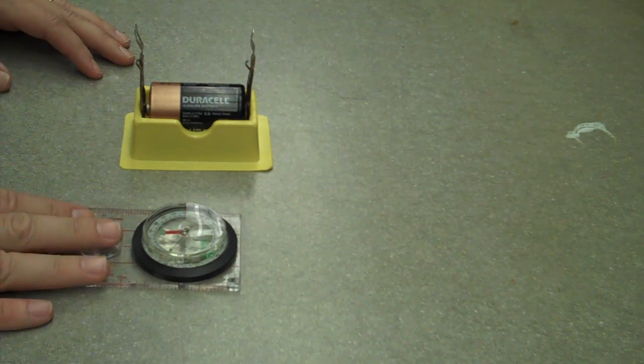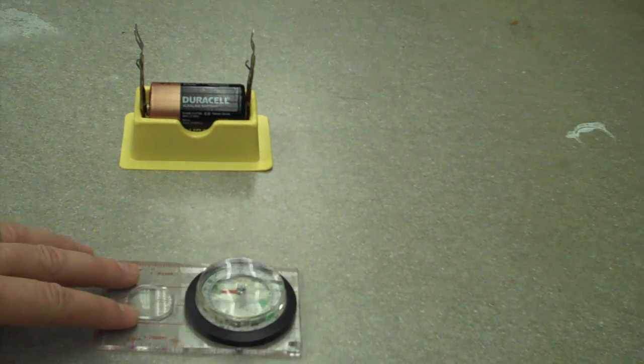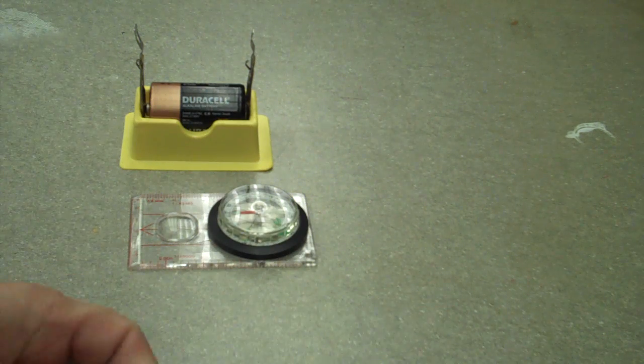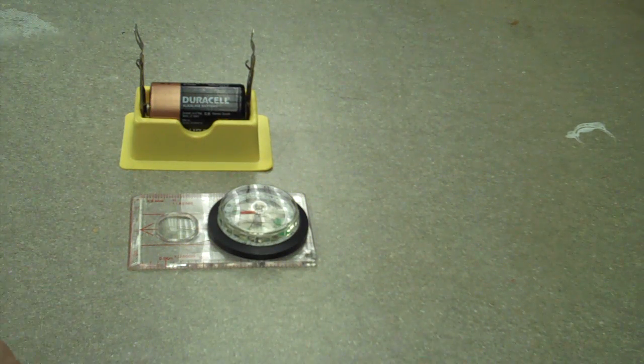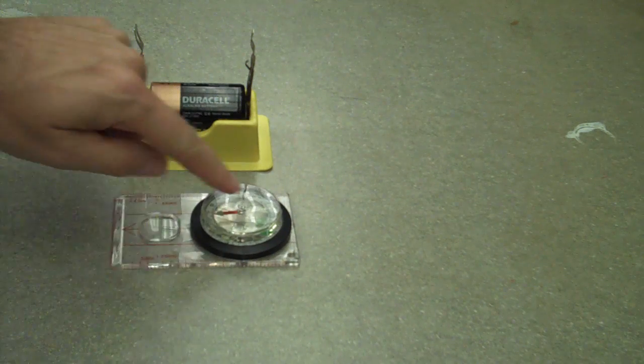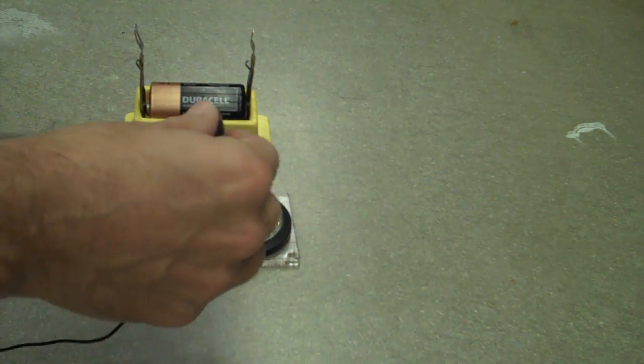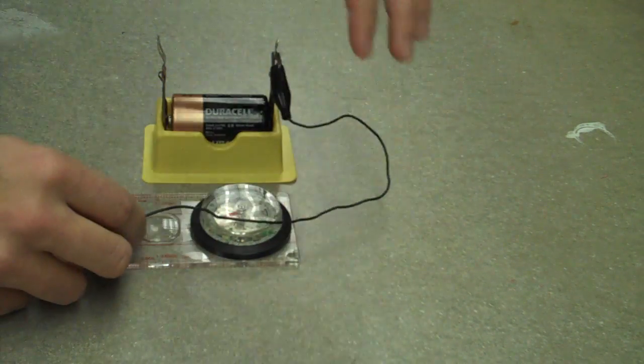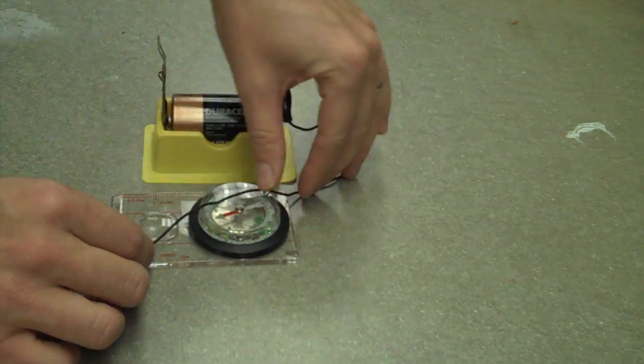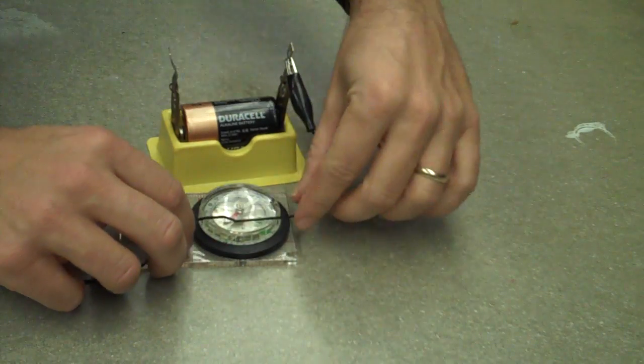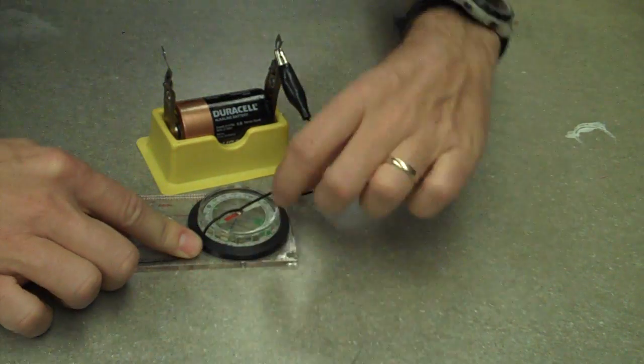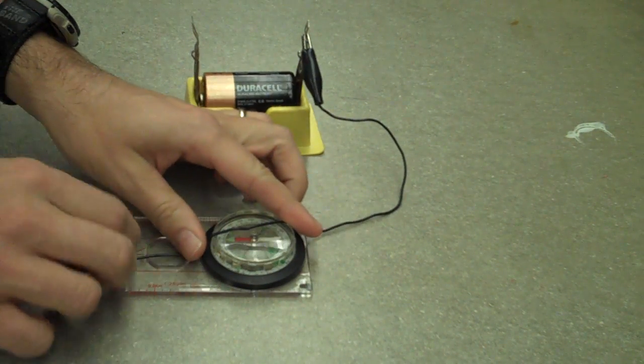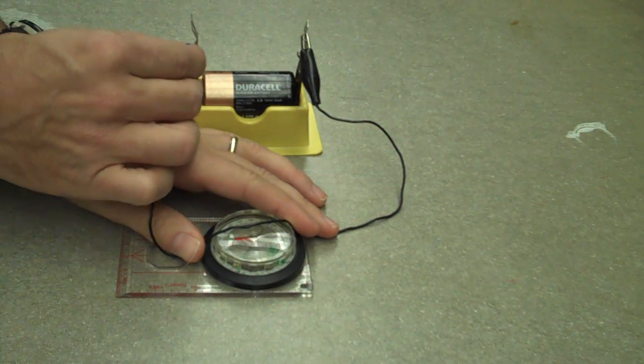So I'm going to start with this compass right here, which you can see. Don't cross this line. Just making sure I know where to go. Okay, so here's the compass. The needle's pointing north and here's the battery. And I'm just going to place that wire just like that.